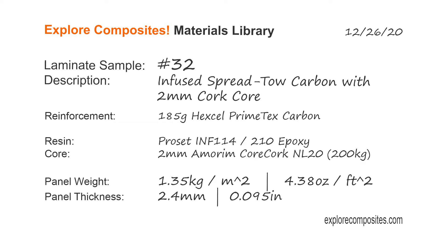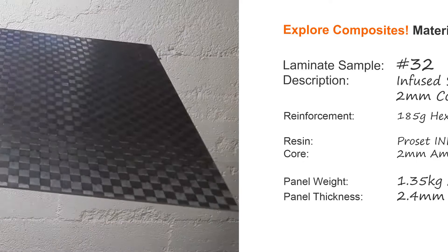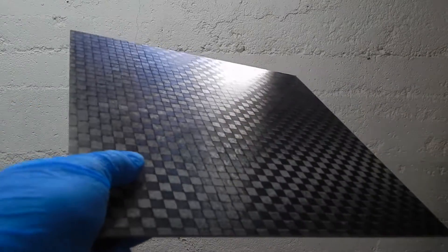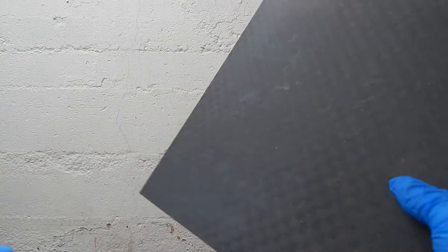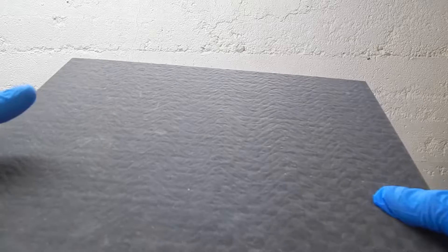Welcome to the Explore Composites Materials Library. This is laminate sample number 32. This one is an infused carbon and cork thin panel. It's got a light spread toe skin on each side of 2 millimeter 200 kilogram core cork.